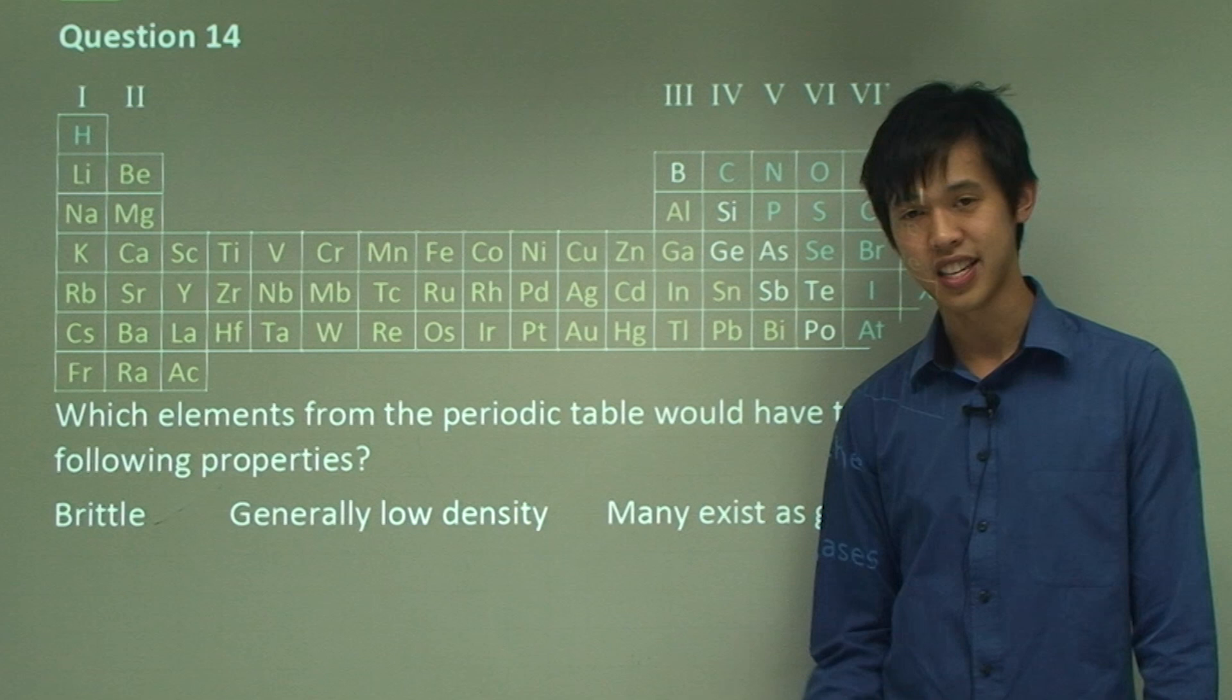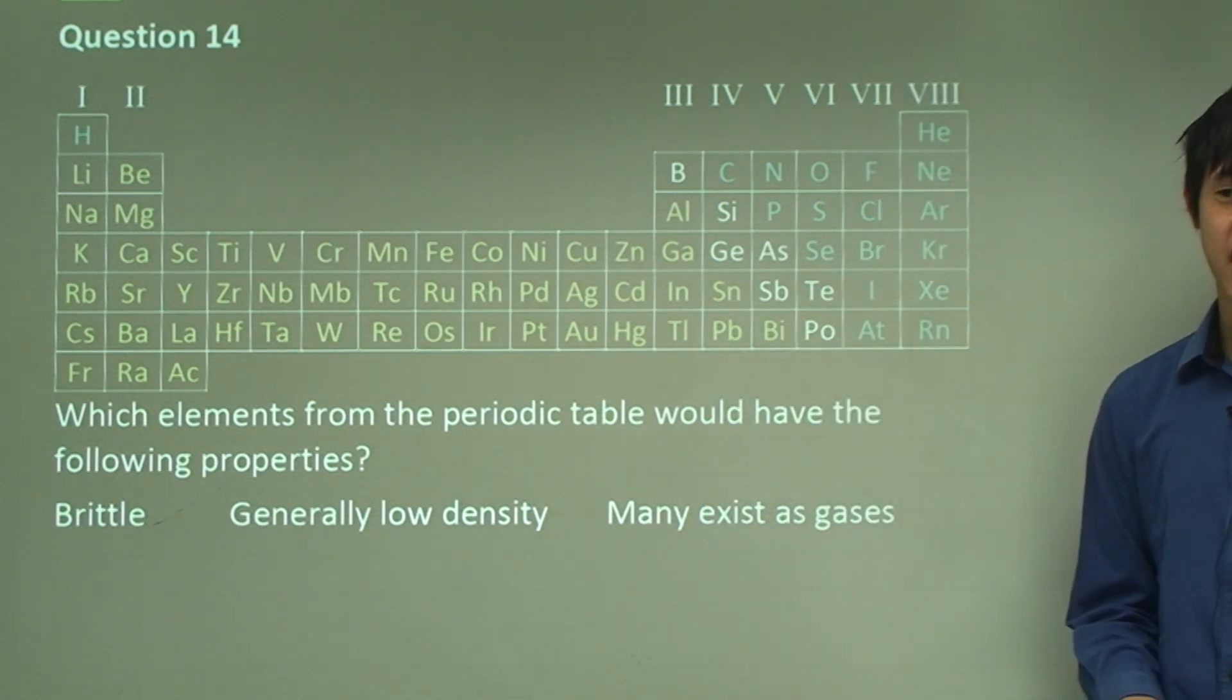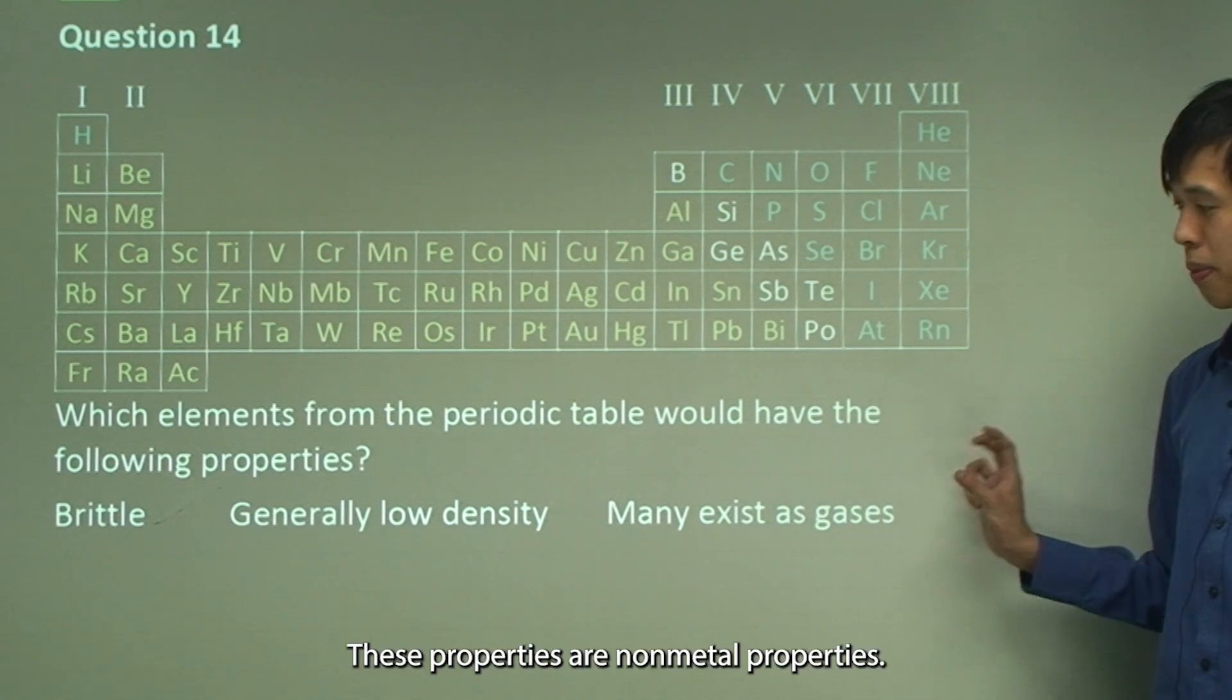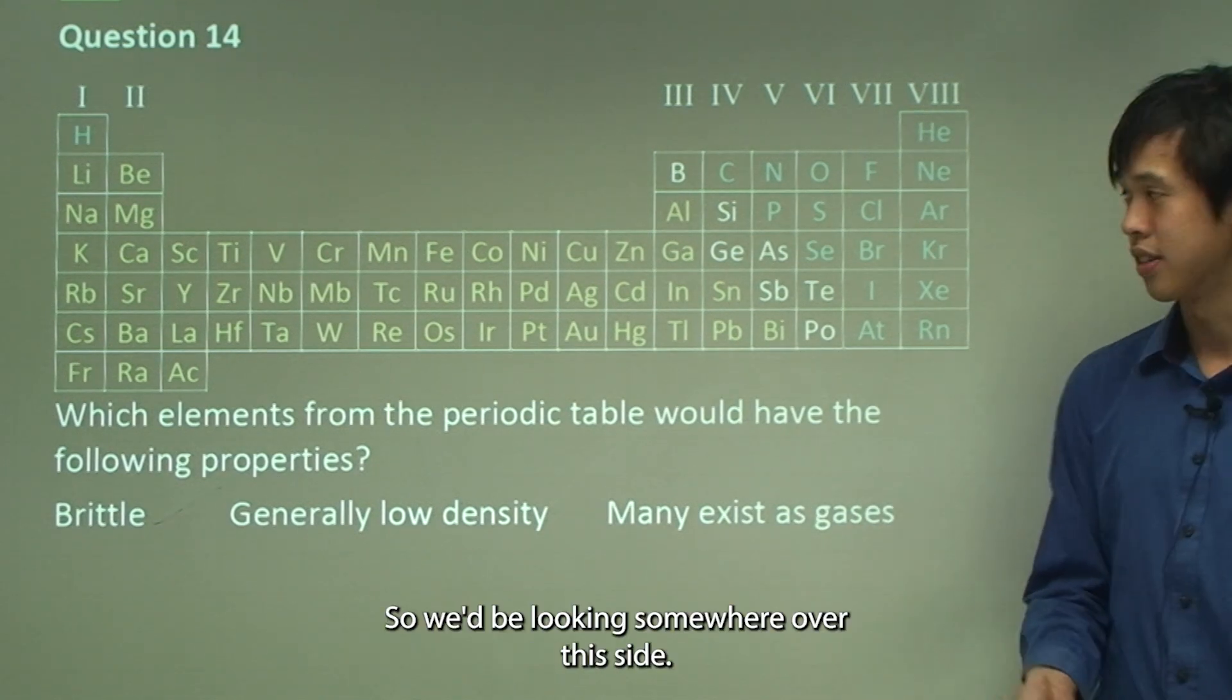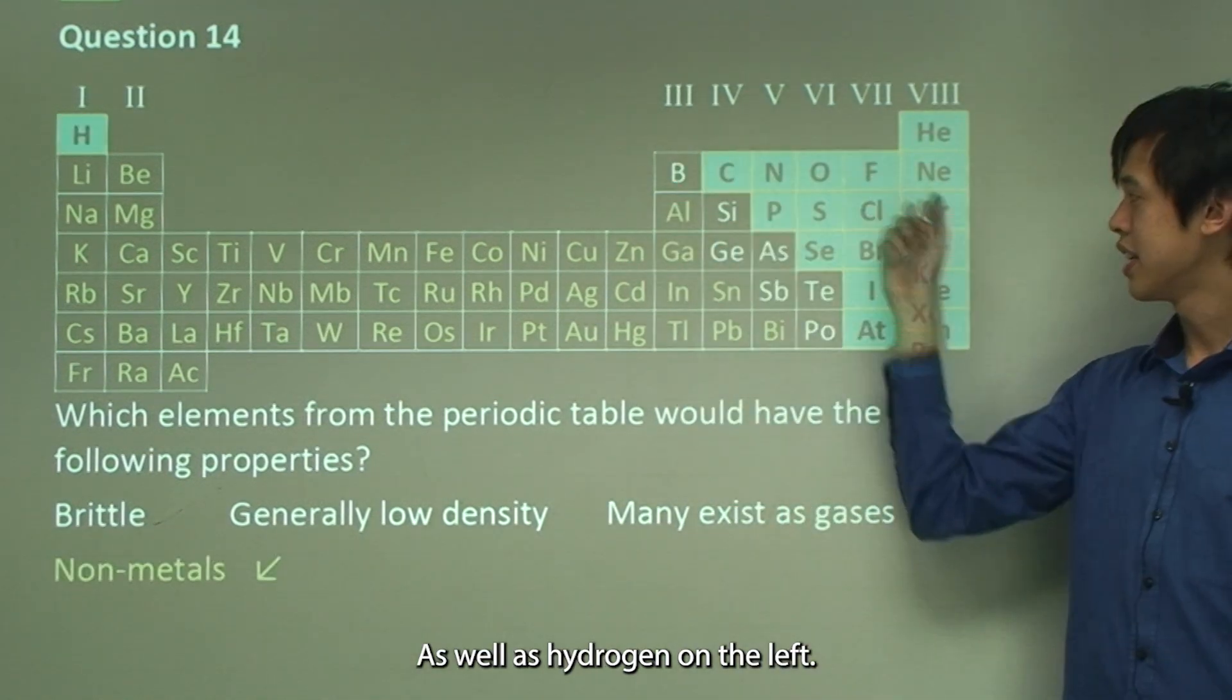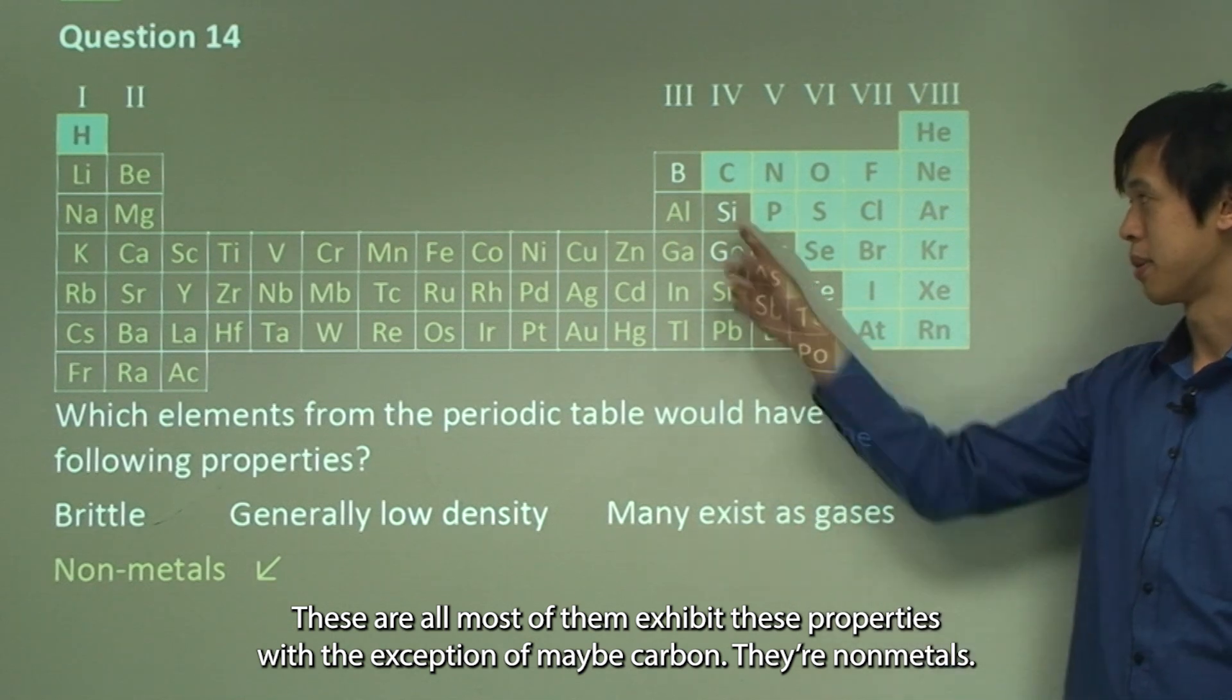Which elements from the periodic table are brittle, generally low density, and most of them exist as gases? If you were to guess, well you know this one. These properties are non-metal properties so we'd be looking somewhere over this side as well as hydrogen on the left. These are all, well most of them exhibit these properties with the exception of maybe carbon. They're non-metals.